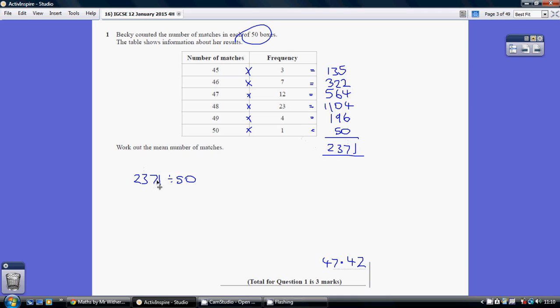So 2371 matches divided across the 50 boxes gives us 47.42 matches. Now don't round, you've got to give the complete answer 47.42.